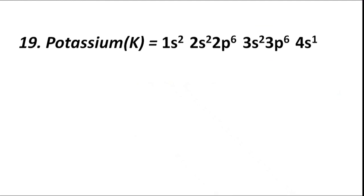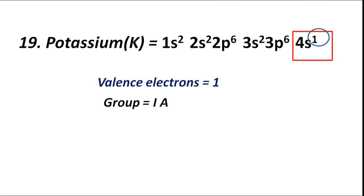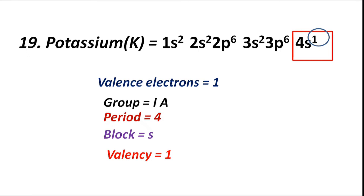Atomic number 19, potassium (K), has electronic configuration 1s2 2s2 2p6 3s2 3p6 4s1. The valence shell is fourth (N), which contains valence electrons 1. Valence electrons equal to 1, therefore group IA or 1A. Period 4 — highest coefficient is 4, or N shell, n equals 4. Block S — valence electrons fill 4s sub-shell. Valency is 1.